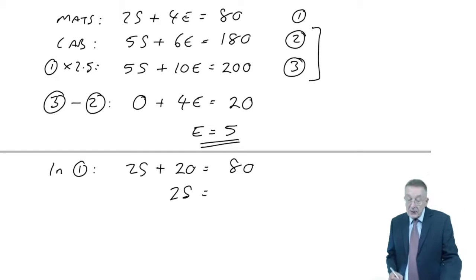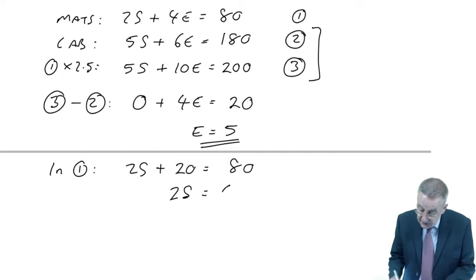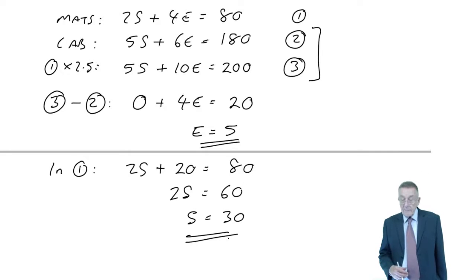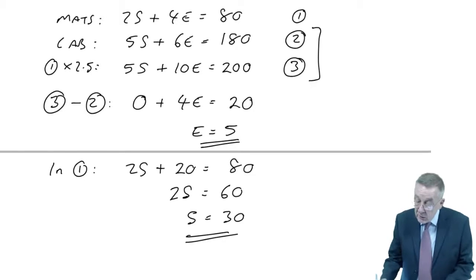And now I know what E is, I can go to either of the equations and work out S. If I go to the first equation, 2S plus 4E. Well, E is 5, so 4E is 20, is 80. Subtracting 20 from both sides, 2S is 60.